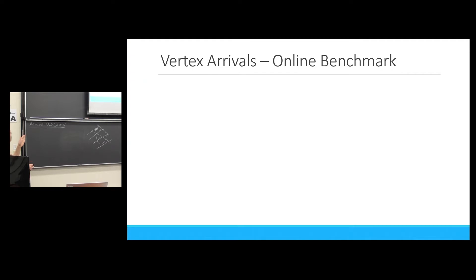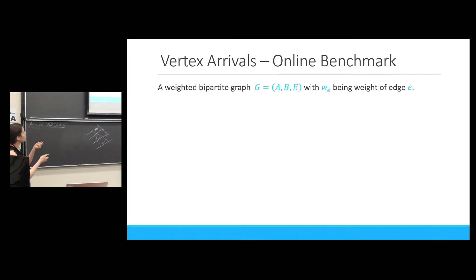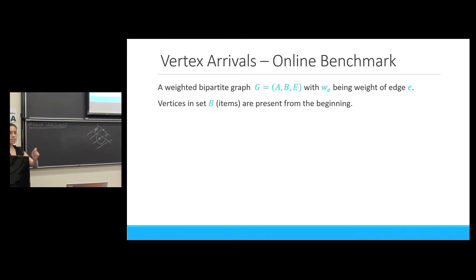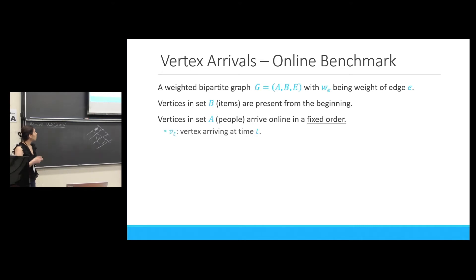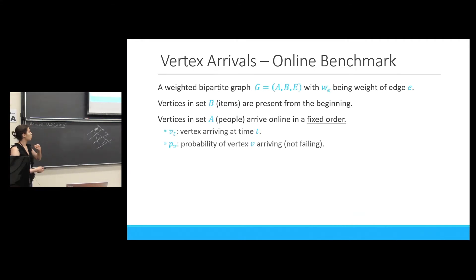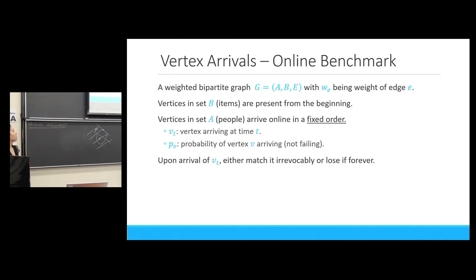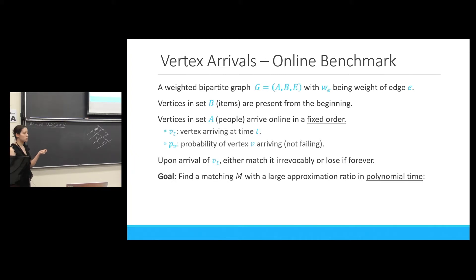The focus of this talk will be on the vertex arrival version. We have a bipartite graph with vertices in parts A and B, and w sub e for the weight of edge e. Vertices in part B are the offline vertices present from the beginning. Vertices in set A are the online vertices arriving in a fixed order known to us. At time t, vertex v_t is the one arriving. We have p sub v for the probability of any vertex actually arriving. Either vertex v_t arrives and we decide irrevocably whether to match it, or it doesn't arrive with probability 1 minus p sub v. Our goal is to find a matching m with a large approximation ratio in polynomial time — the expected weight of our matching over the expected weight of the optimal online solution.